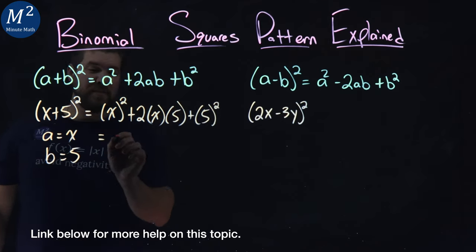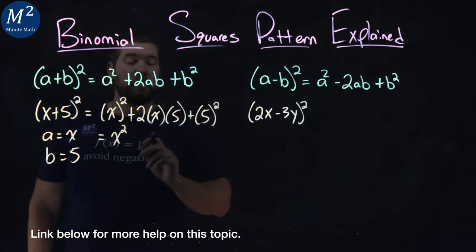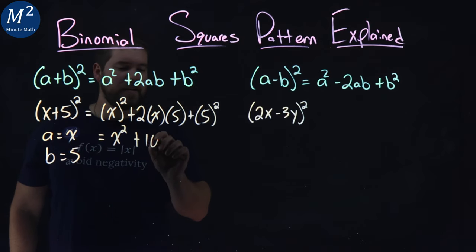And now we have to simplify. x squared, just like that. 2 times x times 5, multiply 2 and 5 together. We got a 10, we got 10x right here.